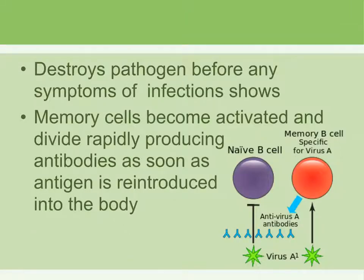The main purpose of the secondary immune response is to destroy the pathogen before actual symptoms show up. Memory cells become activated and divide very rapidly when the antigen is reintroduced into the body — the key is that it happens very quickly.